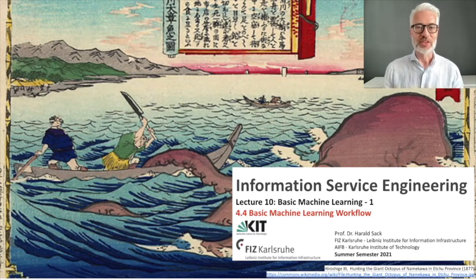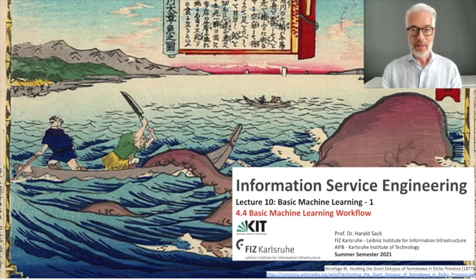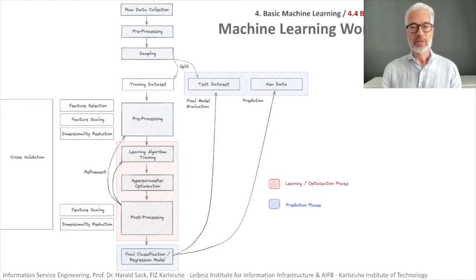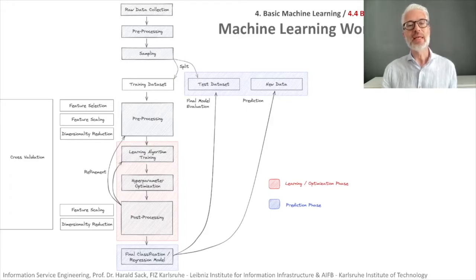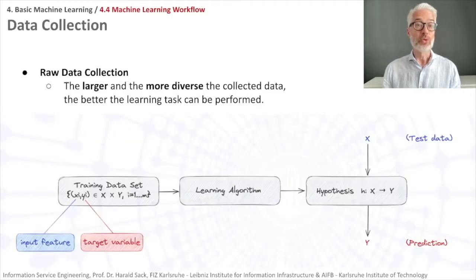This is Information Service Engineering, lecture number 10: Basic Machine Learning, Part One. In this last section of this lecture, we want to take a closer look at the basic machine learning workflow. We have already looked at the workflow of supervised learning in one of the previous sections, and we start usually with the data collection task, followed by several pre-processing steps and data sampling, before going into the learning algorithm.